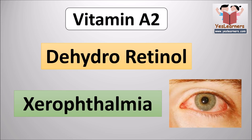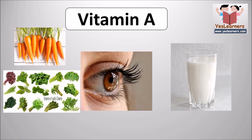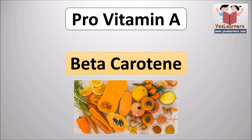The scientific name of vitamin A2 is dehydroretinol. The deficiency of vitamin A2 causes xerophthalmia. The vitamin essential for the health of eyes is vitamin A. Vitamin A is abundant in green leafy vegetables, milk, and carrots. The pigment known as pro-vitamin A is beta-carotene. Vitamin A is stored in the liver.